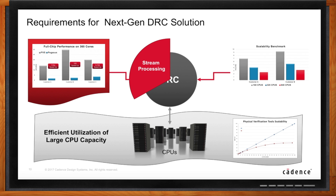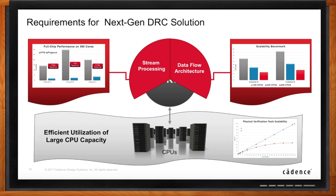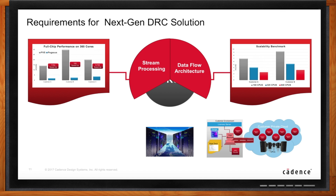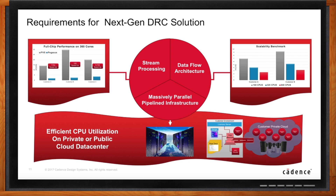The second component is what we call dataflow architecture — asynchronous or concurrent processing. This enables us to avoid serial processing and instead have a lot of concurrent things going on simultaneously. You take those million threads from stream processing that can talk to each other and start them in parallel in an efficient way, giving a really nice way to optimize CPU utilization. The third is massively pipeline infrastructure — something also new in EDA.